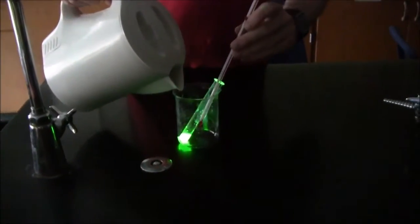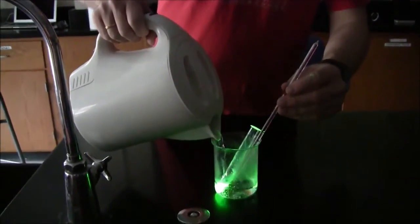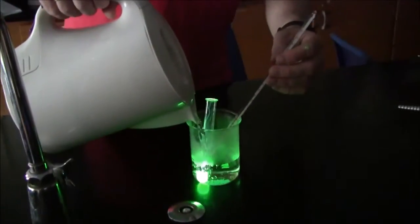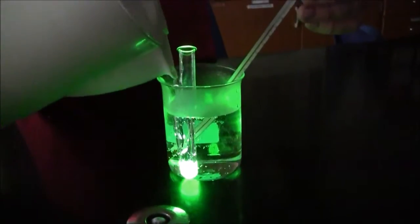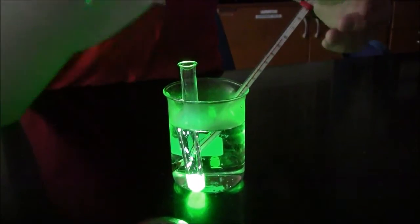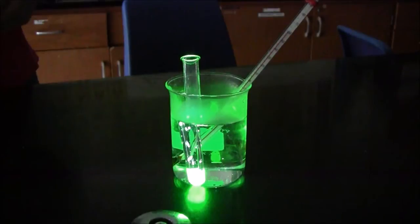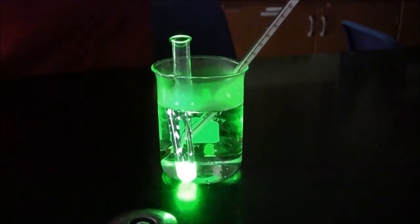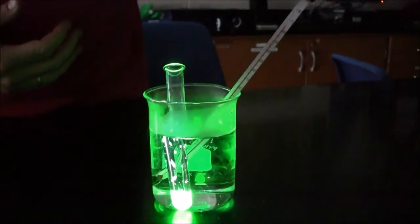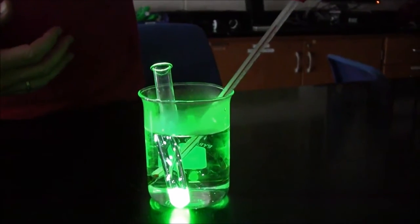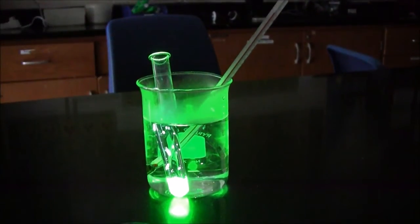Now I'm going to add some hot water. I want to get the glow stick up to about 50 degrees. Notice how it glows more intensely as the temperature has increased. OK so that's about 60. So I'm going to want to make it a little cooler.